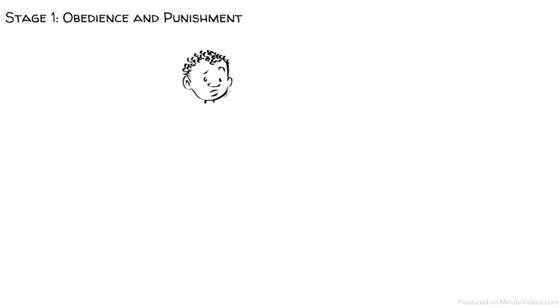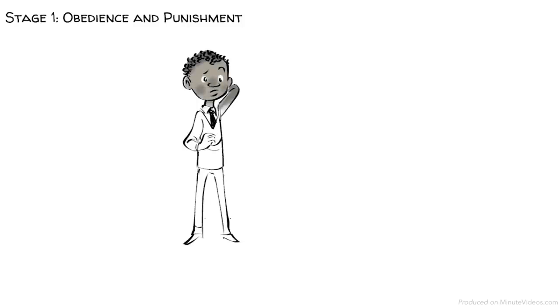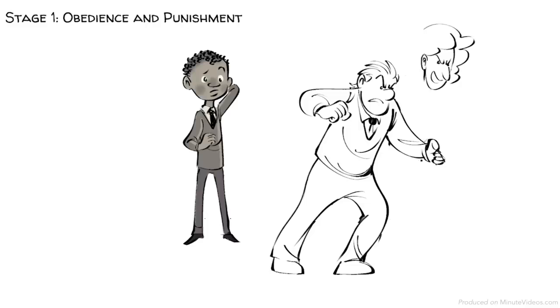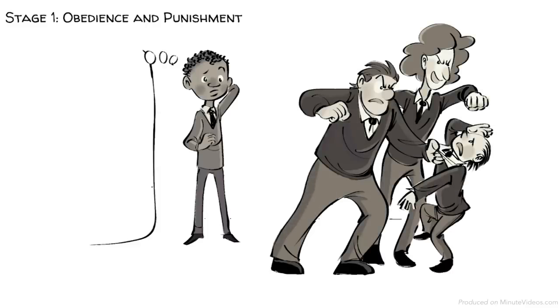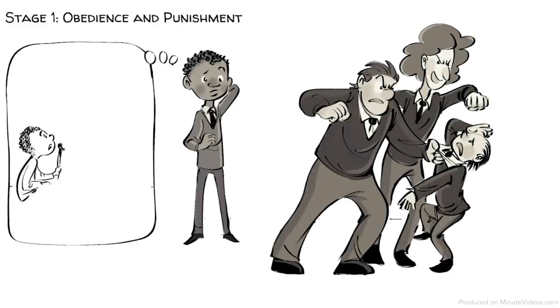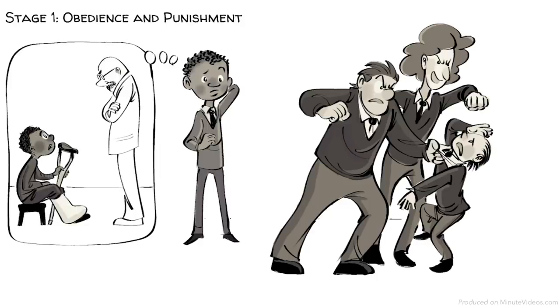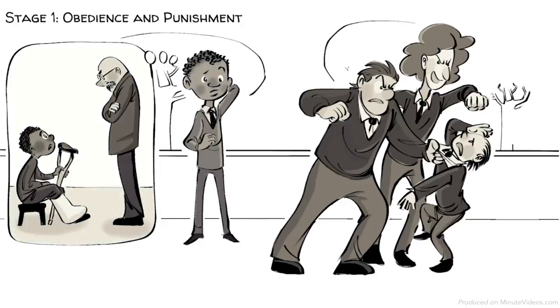At stage one, we make moral judgments based on obedience and punishment. Finn's sense of good or bad is directly linked to whether he gets punished or not. Finn sees what is happening to his friend and wants to help, but he doesn't because he is afraid the teacher may punish him if he gets caught fighting. He asks himself: how can I avoid punishment?